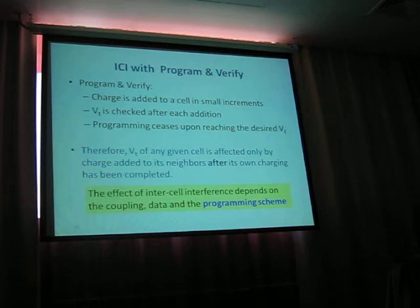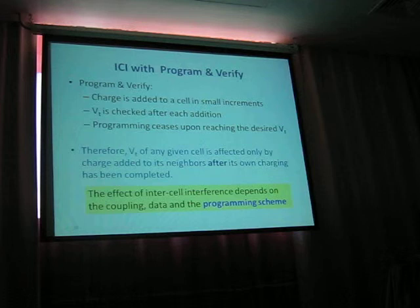Let's review some insights so far. The common programming algorithm in flash memories uses program and verify, where charge is added to a cell in small intervals. The Vt is checked after each addition, and programming ceases upon reaching the desired Vt.